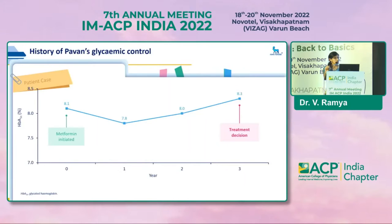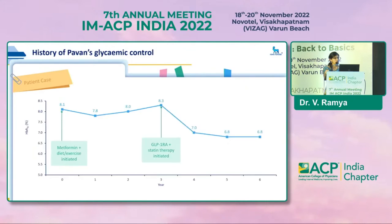This is the profile of this patient. He was initiated on metformin at diagnosis when HbA1c was 8.1%; at the end of one year, HbA1c was 7.8%, but it progressively increased. The treatment decision at this point — HbA1c at 8.3% — was whether to keep him on sulfonylurea and metformin or initiate GLP-1 analog. He was started on GLP-1 analog with statin therapy at the end of three years.